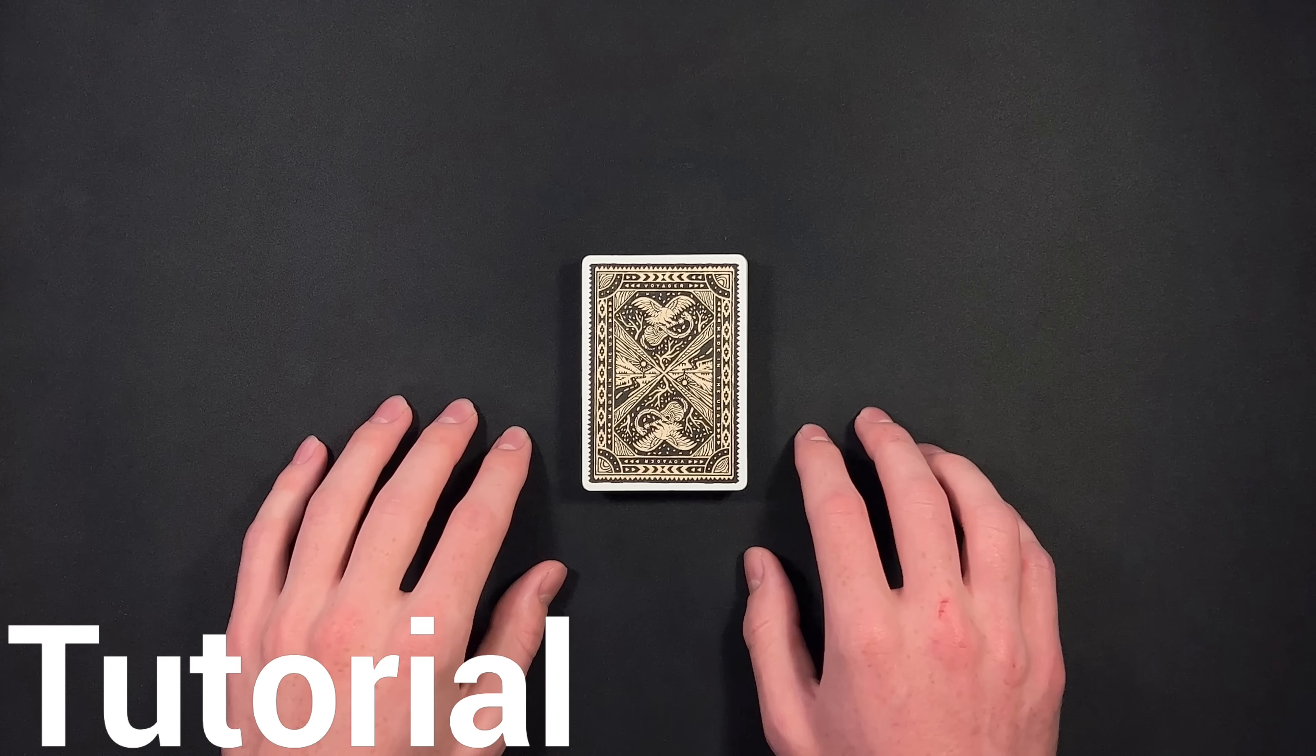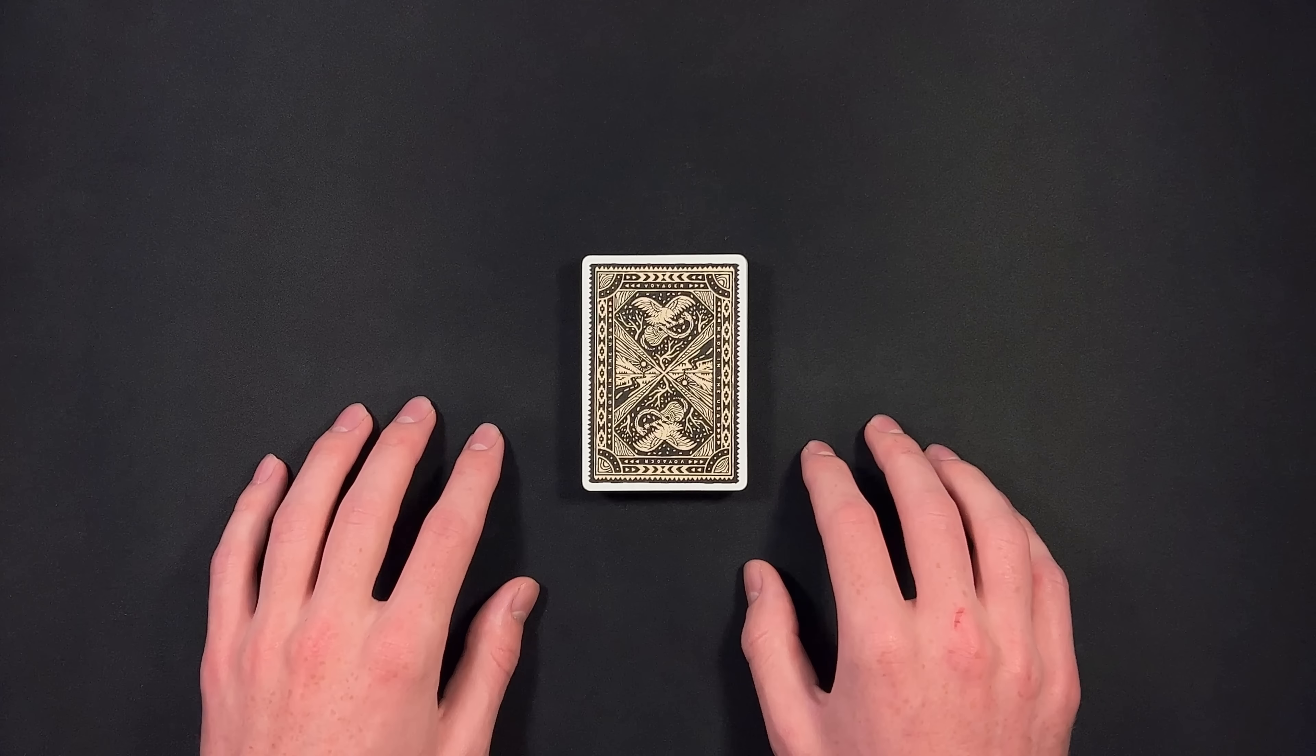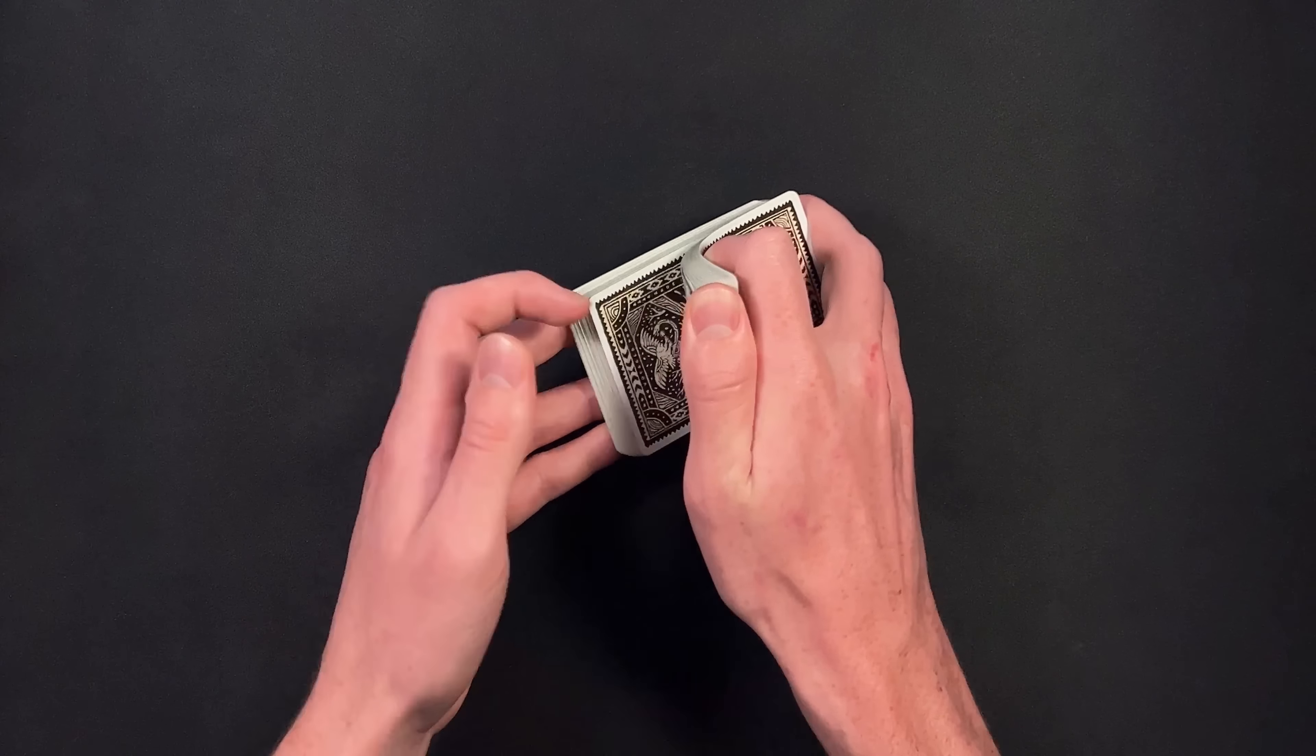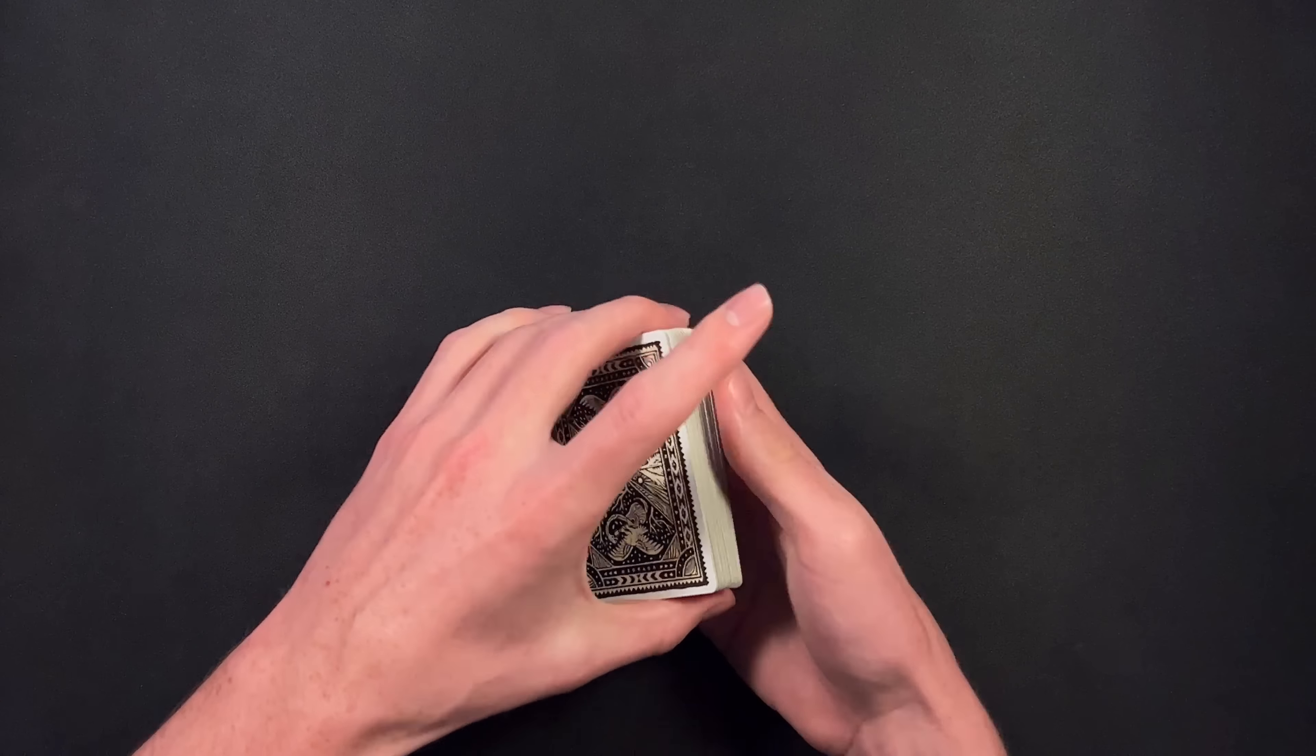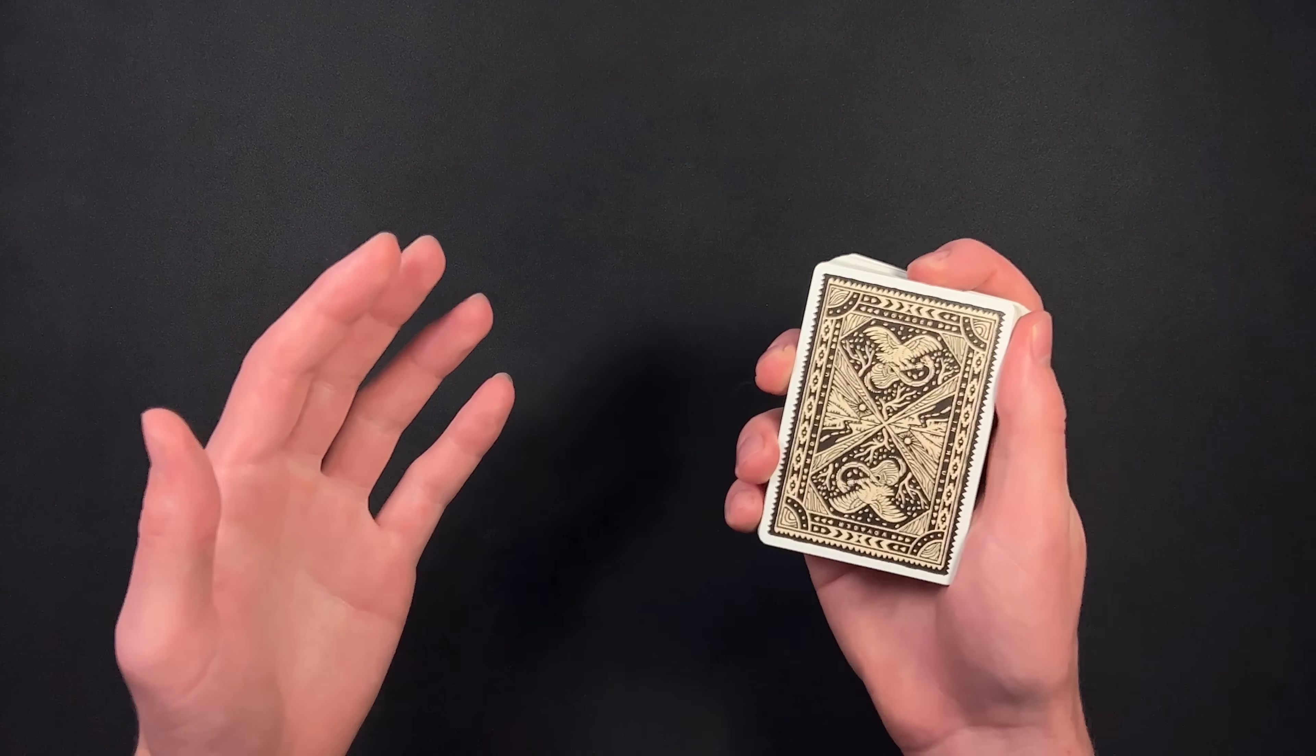All right. So this is a really cool card trick that you should definitely learn. So grab your deck of cards and let's get right into the tutorial. You're going to begin with your spectator giving the deck a shuffle. Once they are done, you're going to have them choose a card. Now, once they choose the card, you're first going to control it to the top of the deck.